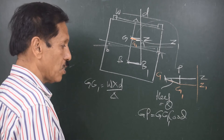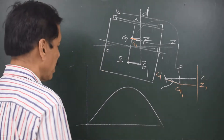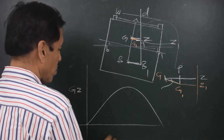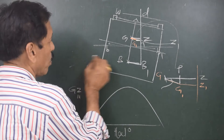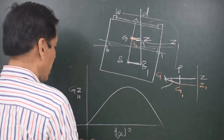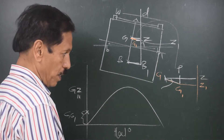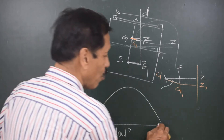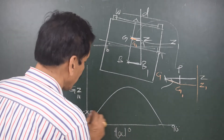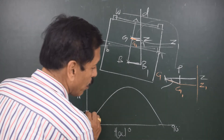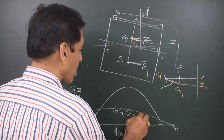The reduction of righting lever is GG1 cos theta. What happens to the GZ curve then? The Y axis is GZ in meters and the X axis is heel in degrees. Suppose W times D upon displacement, that is GG1, is indicated on the diagram. Drawing a cosine curve of GG1: as you know, cosine is maximum at 0 degrees and equals 0 at 90 degrees. So this cosine curve — a sinusoidal curve — has a maximum value at 0 and the value of GG1 is 0 at 90 degrees. This curve is called GG1 cos theta.